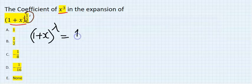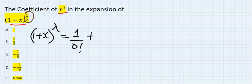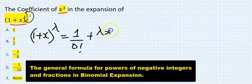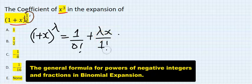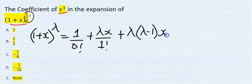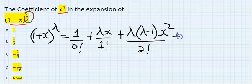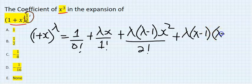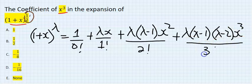I'm going to have 1 over 0 factorial plus lambda x over 1 factorial plus lambda in bracket lambda minus 1 x to the power of 2 over 2 factorial plus lambda, lambda minus 1 in bracket lambda minus 2 x to the power of 3 over 3 factorial plus it continues indefinitely.